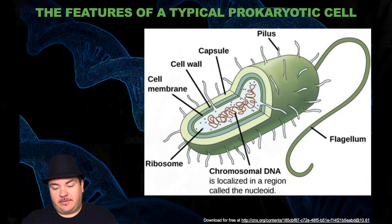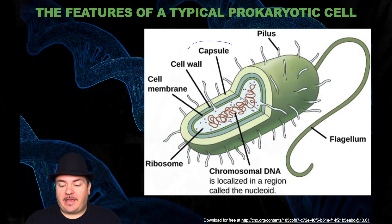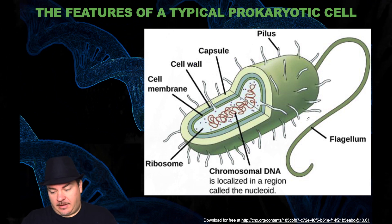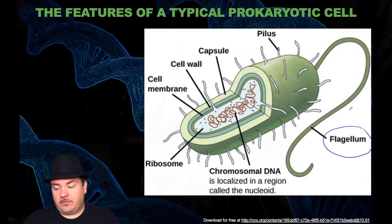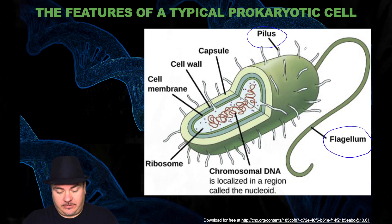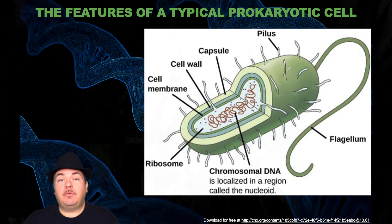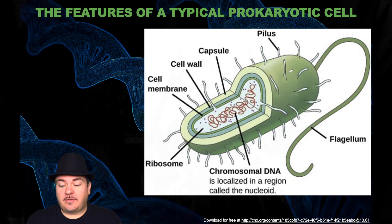They often have a thick, slimy coat called a capsule. They can have a flagella — this long tail here. And they can have pili. We'll discuss some of these structures as we go through this set of video lectures.